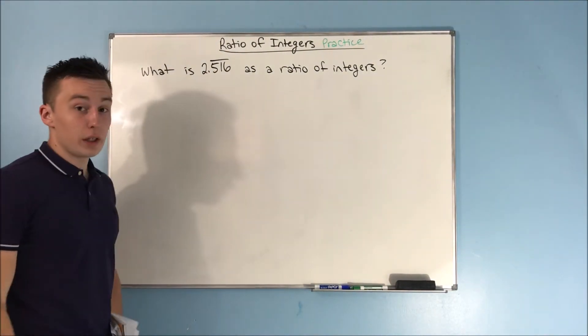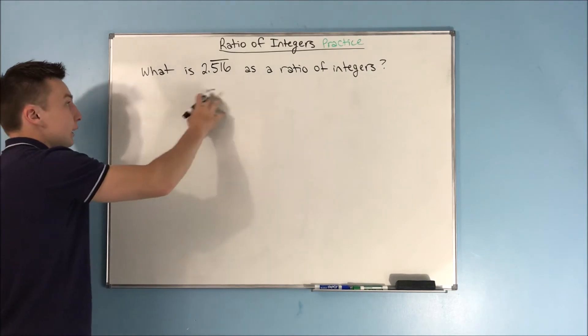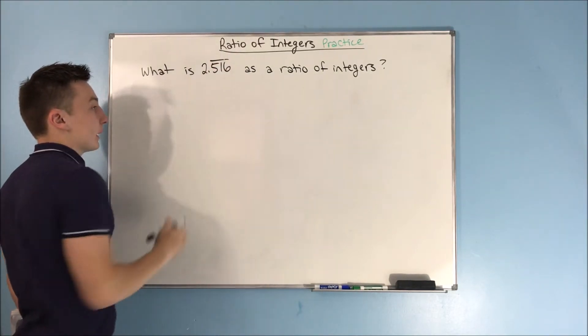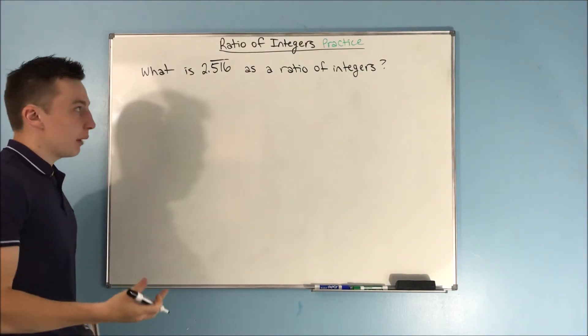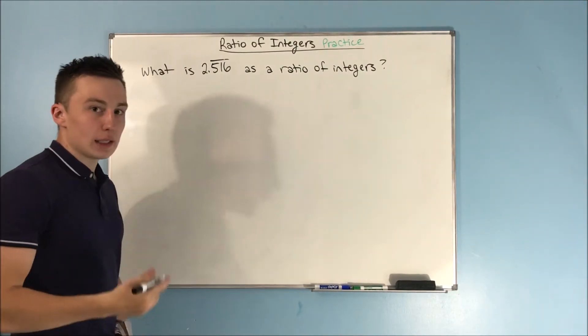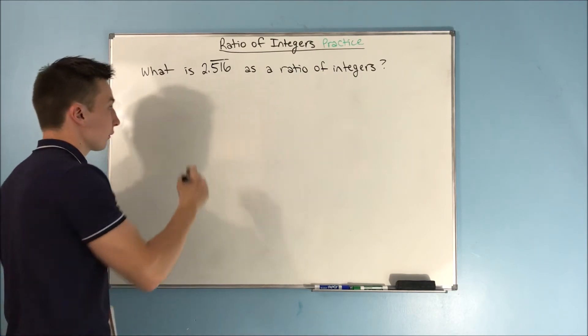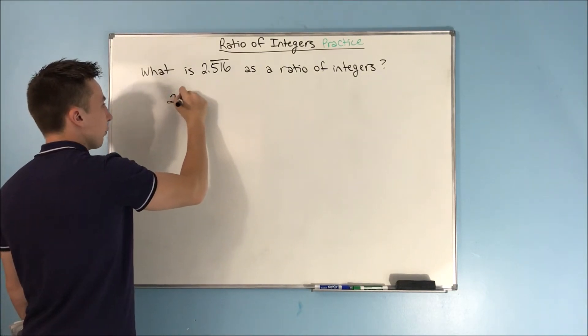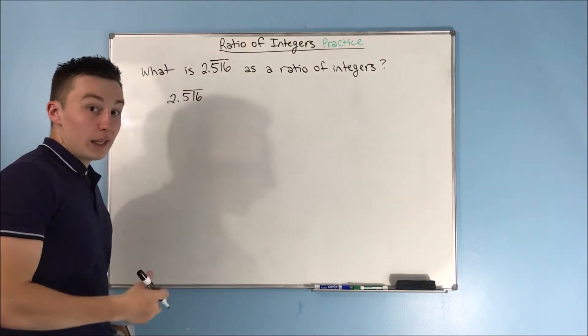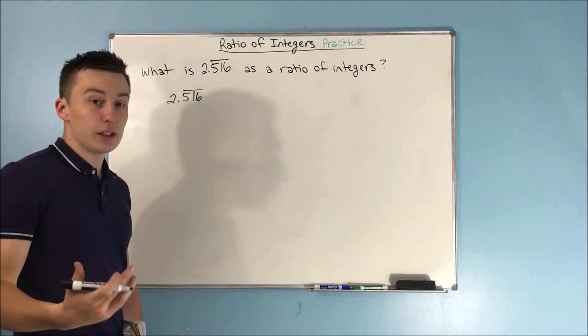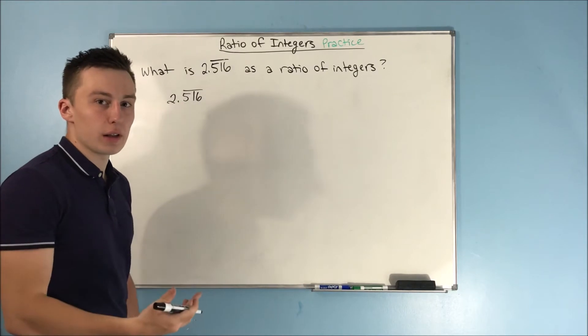Alright, so we have our next problem up on the board here. What is 2.516 where 516 is repeating as a ratio of integers? Now, the first step is to just write this repeating decimal out as an infinite geometric series. You'll notice that since the 2 is not repeating, it's not going to be in our infinite geometric series because it's not going on for infinity.